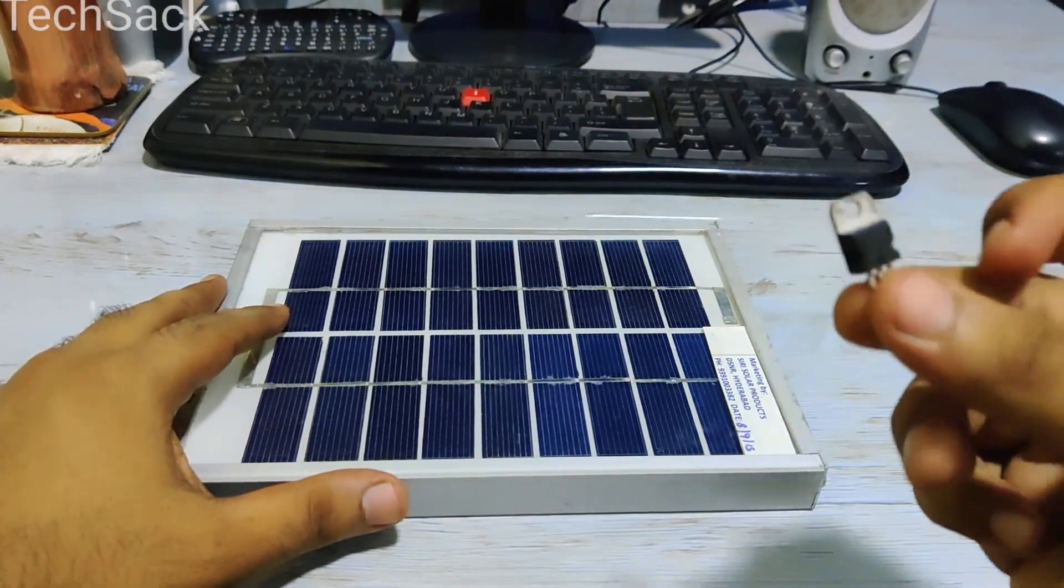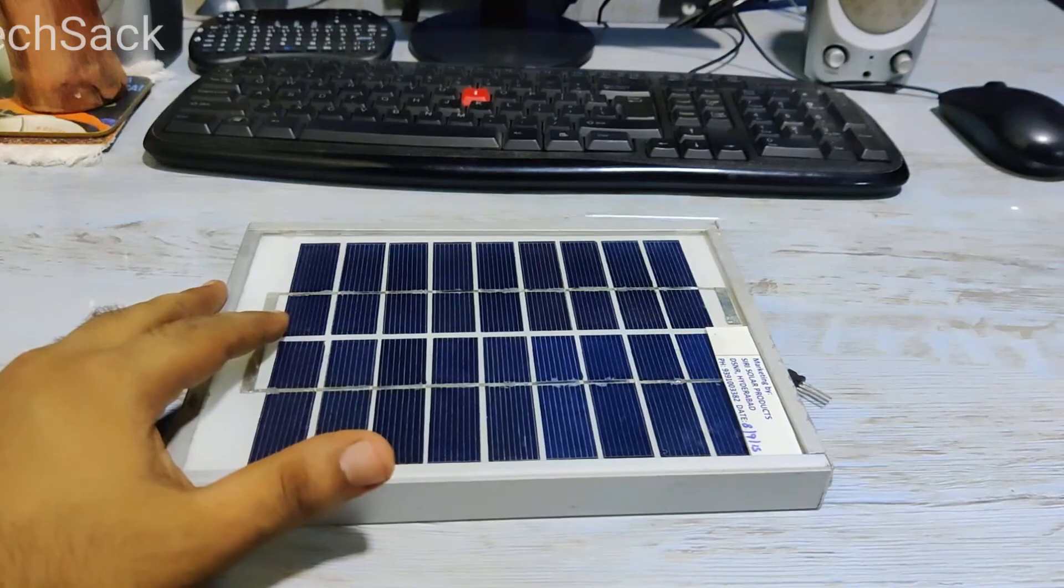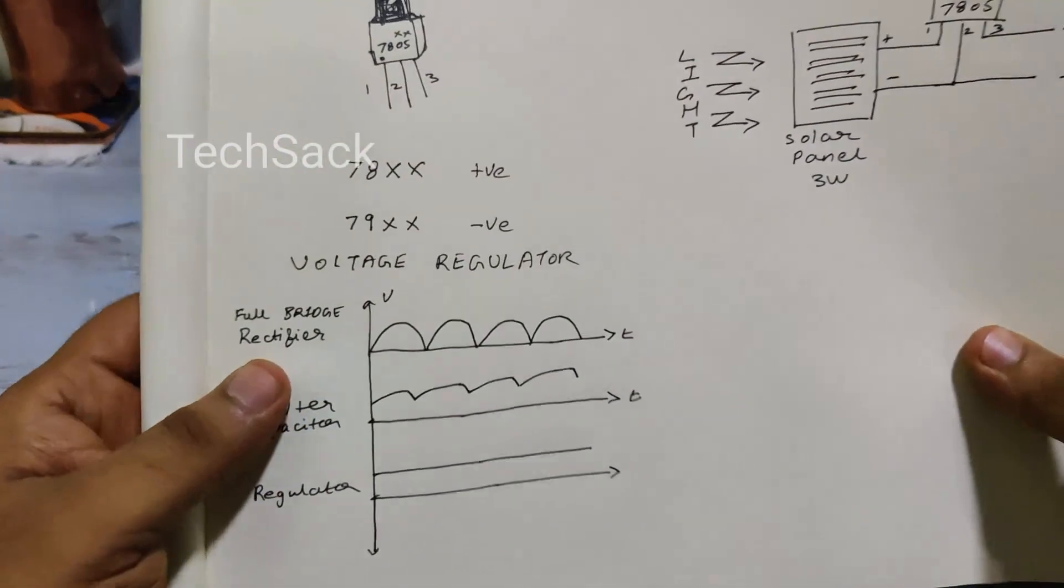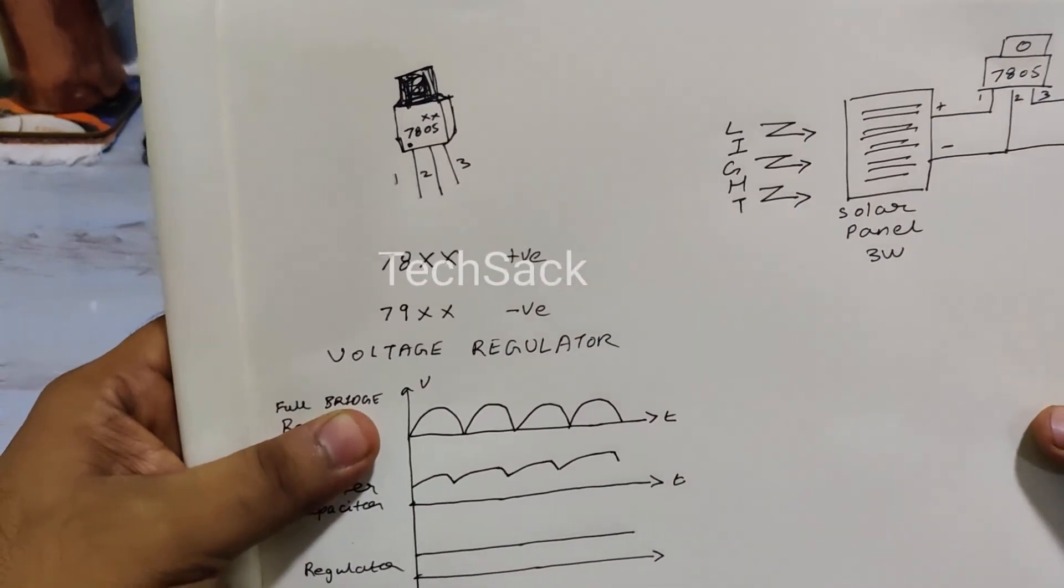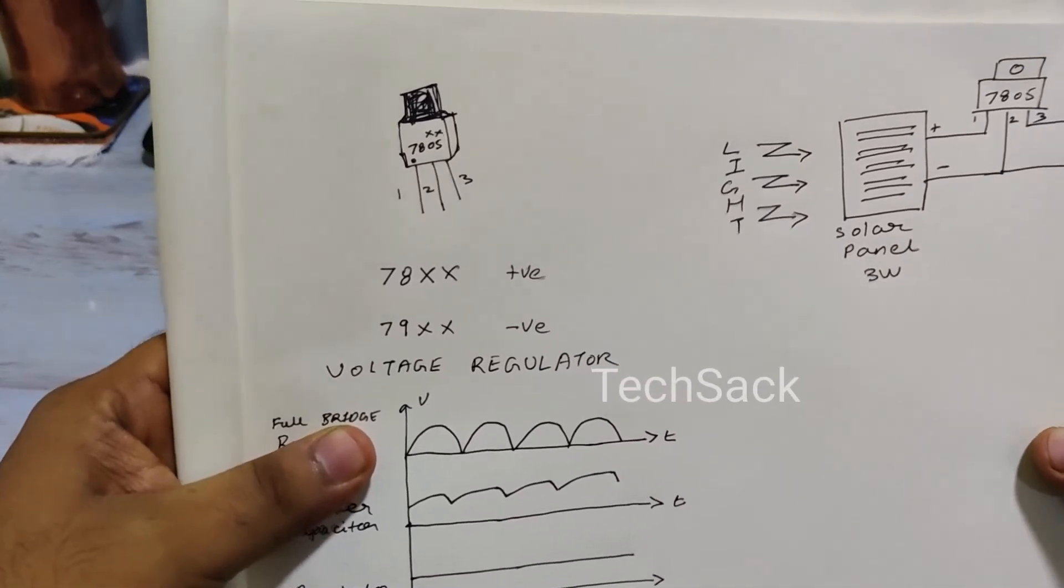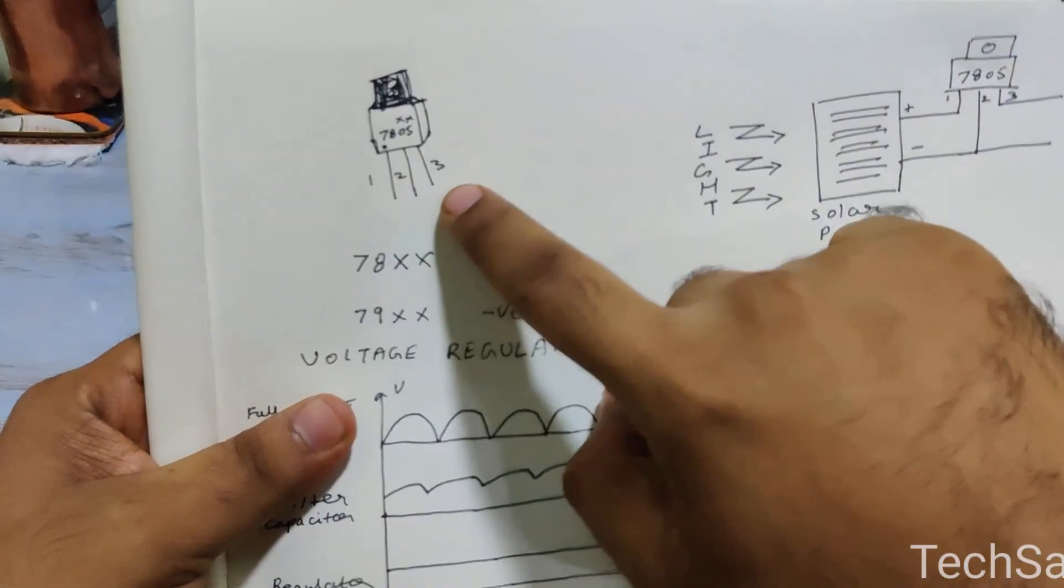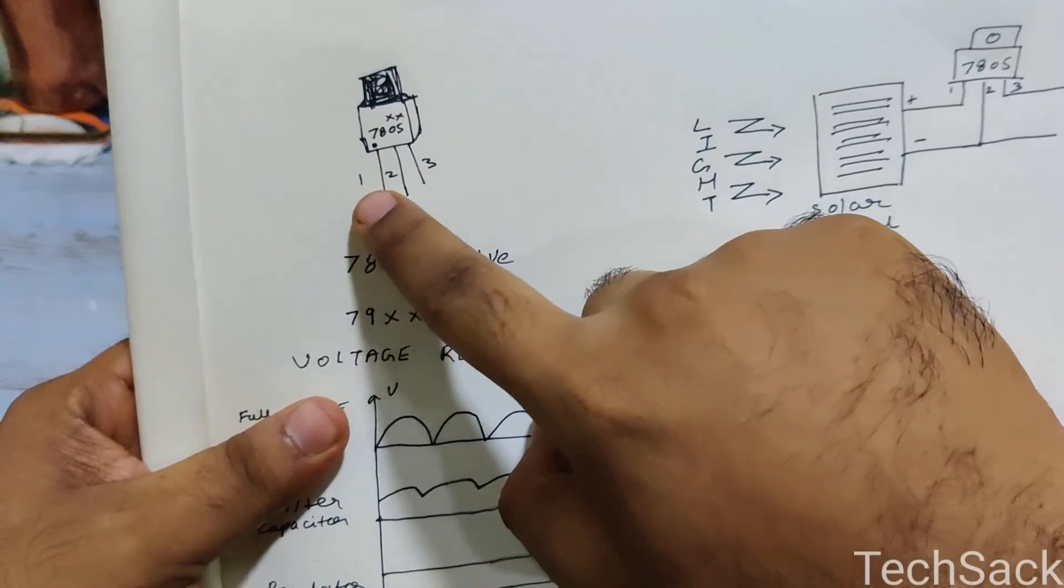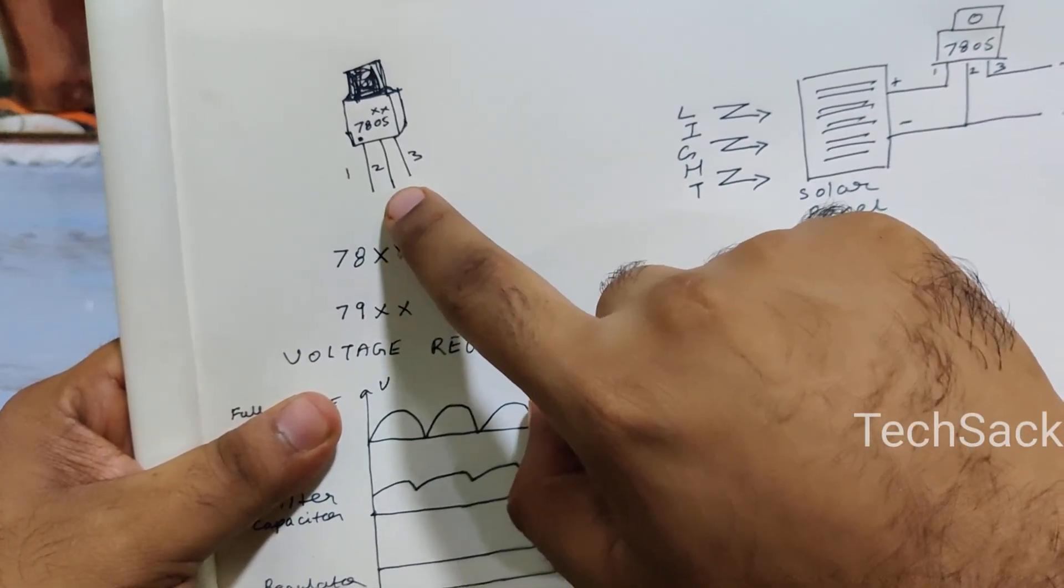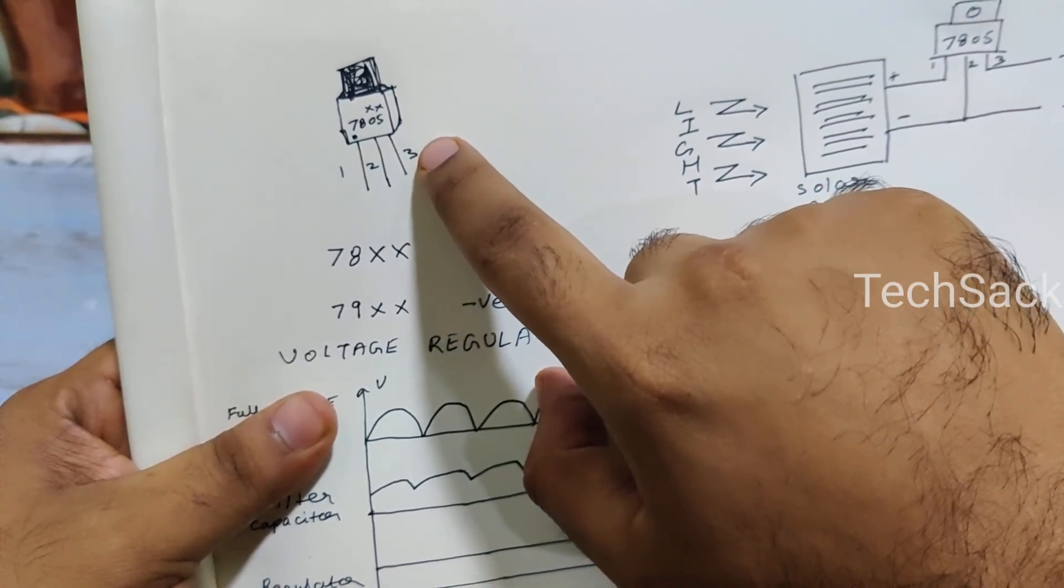Just before we proceed, let's try to understand what the 7805 regulator is. So 7805 voltage regulator is a DC voltage regulator and it has three IC pins. The first pin is the positive input, the second is the ground, and the third is the positive output voltage.